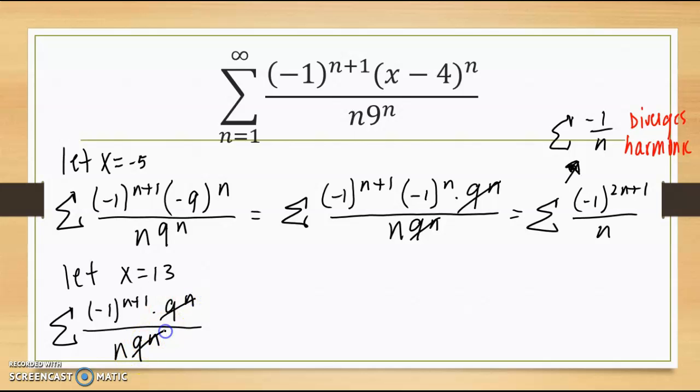These guys cancel right away, giving me the series negative 1 to the n plus 1, all over n.